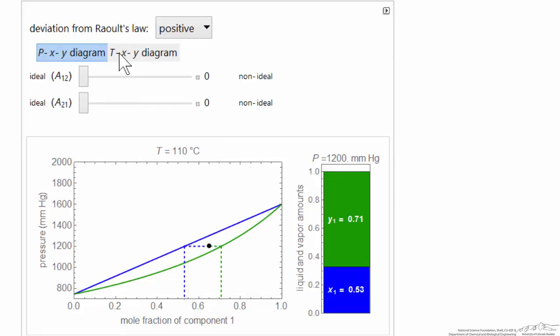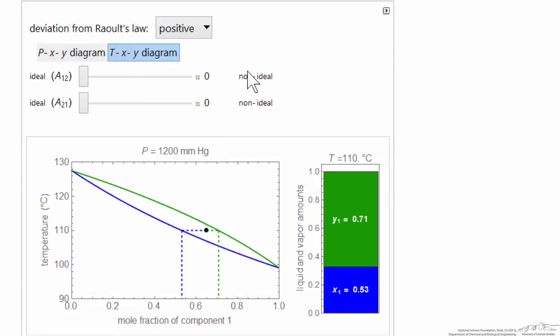And then the corresponding TXY diagram, when the parameters are zero, ideal solutions, these are not straight lines.